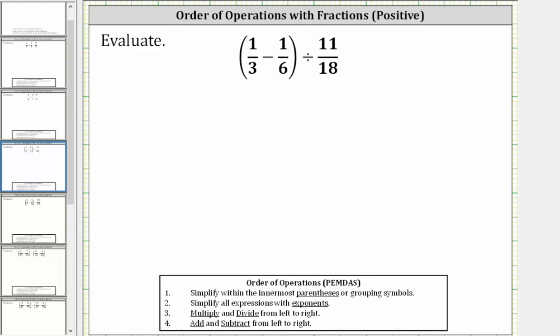We want to evaluate or simplify the given expression. Following the order of operations, the first step is to simplify within the parentheses, which means for our expression, the first step is to determine 1/3 minus 1/6 in the parentheses.